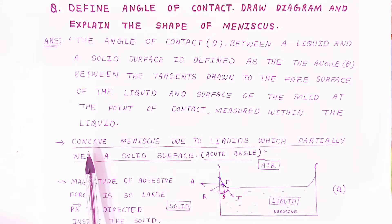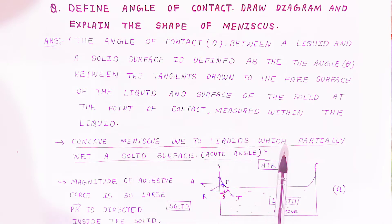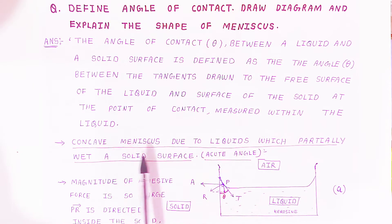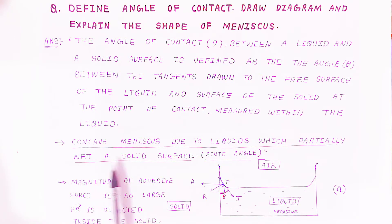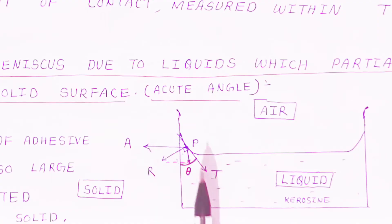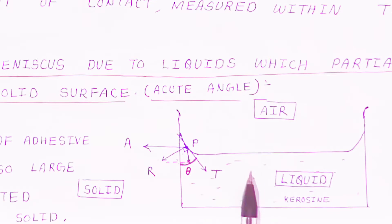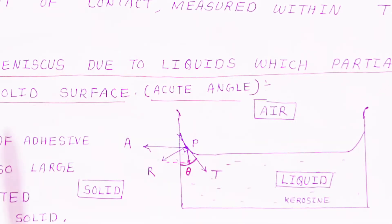The first type is the concave meniscus. A concave meniscus forms for liquids which partially wet the solid surface. This is the surface of the beaker. When the liquid partially wets the solid surface, it forms a concave meniscus and the angle of contact is an acute angle — less than 90 degrees.